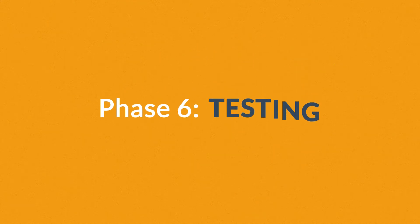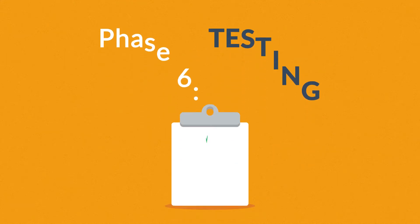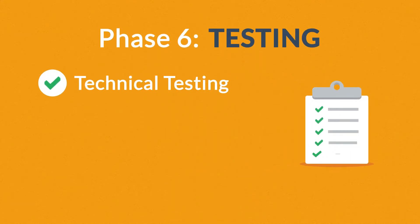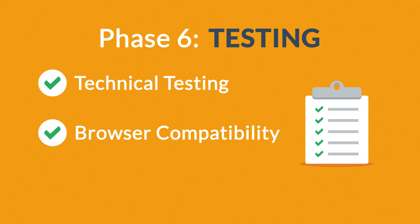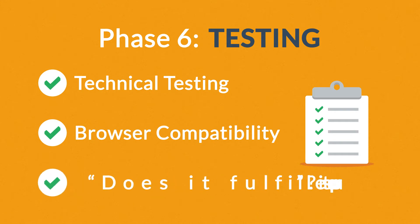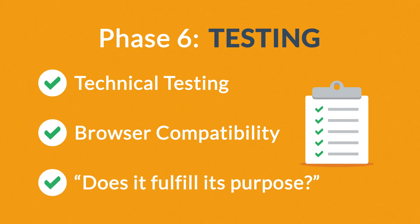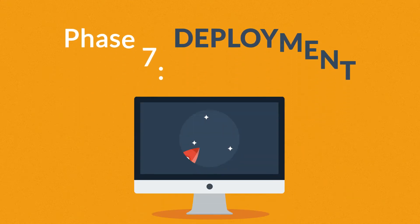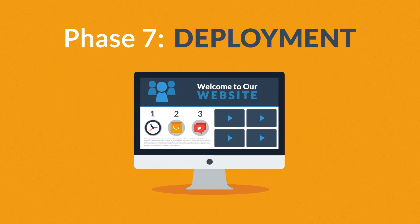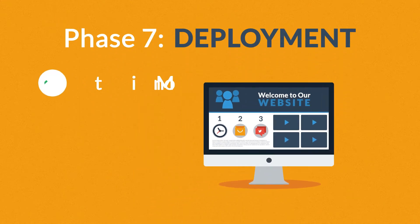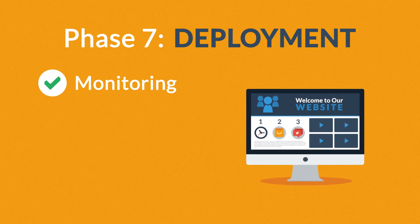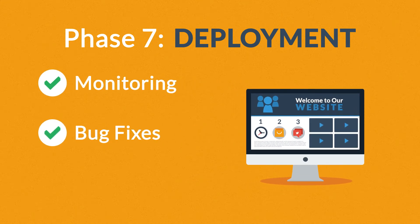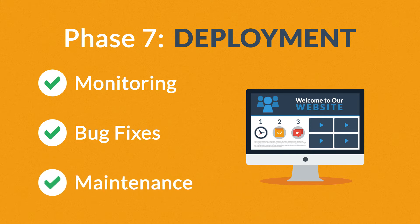Phase 6: Testing. We test all the technical features, like code and scripts, compatibility with major browsers, but we also ask ourselves if the website really fulfills its purpose. Phase 7: Deployment. After we launch the site, our job is definitely not done yet. We always monitor what's happening after the start, enabling us to fix any possible deficiencies. And if you want, we can also manage the future maintenance and updates for you.